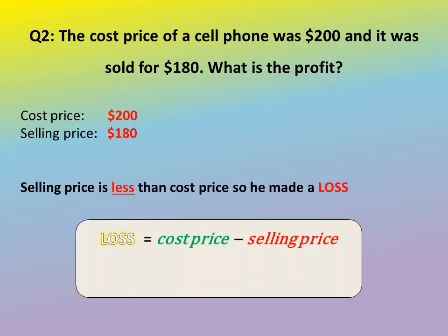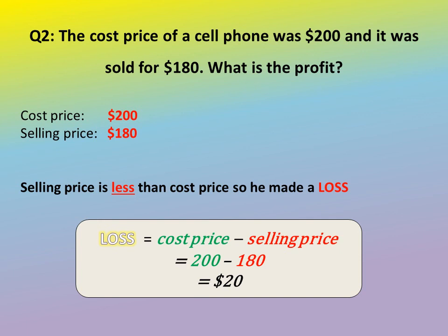So the loss = Cost Price − Selling Price. We take $200 − $180, which gives us $20. The question incorrectly said 'profit' — that's an error. From reading the question you should realize the cost price is more than the selling price, so it has to be a loss. The loss is $20; he lost $20 on that cell phone.